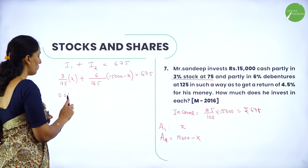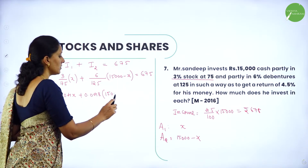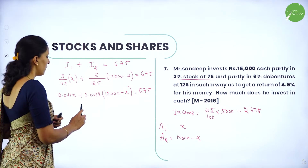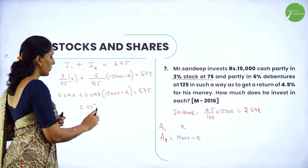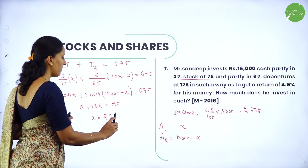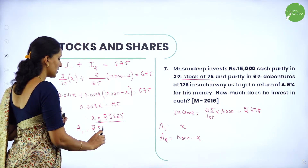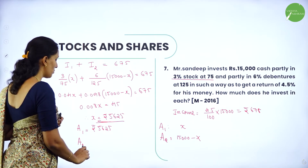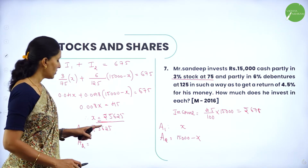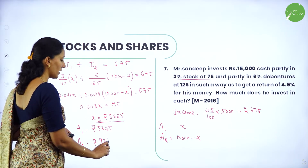Solving: 0.04x + 0.048(15,000 − x) = 675, which simplifies to 0.008x = 45, giving x = Rs.5625. So amount invested in 3% stock is Rs.5625, and amount invested in 6% debentures is 15,000 − 5625 = Rs.9,375.